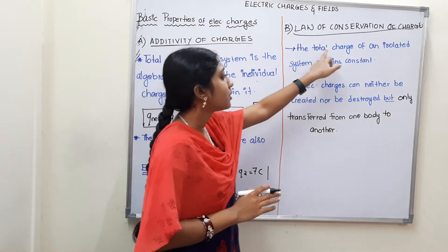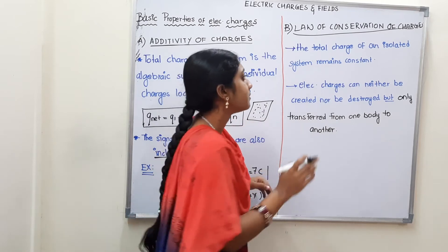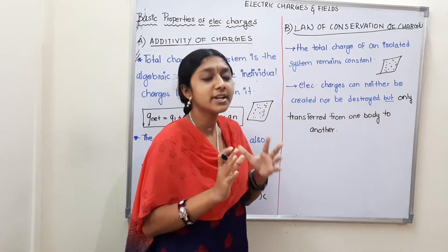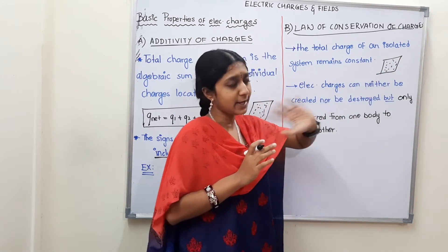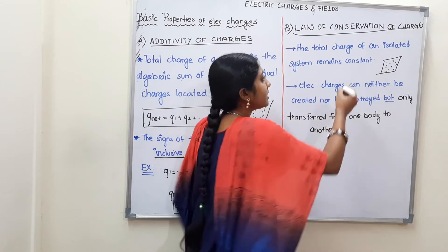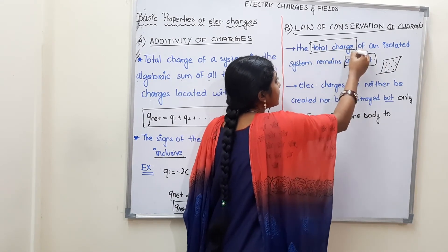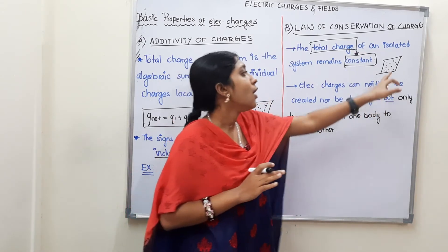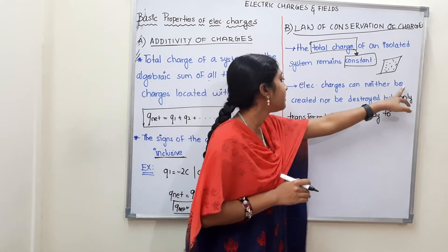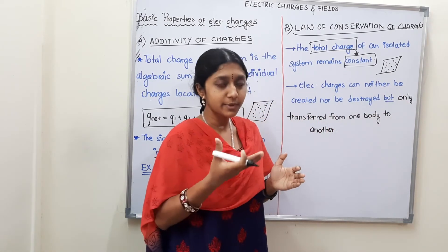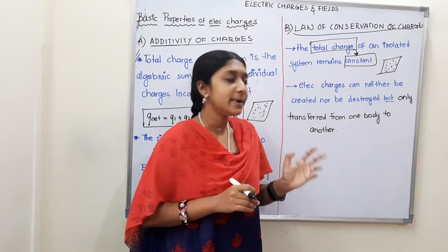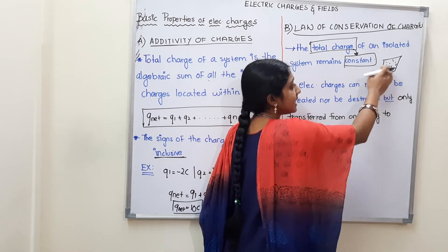The second property is the Law of Conservation of Charges. The total charge of an isolated system remains constant. The charge cannot be created or destroyed — it can only be transferred from one body to another. In an isolated system, the charges remain constant.